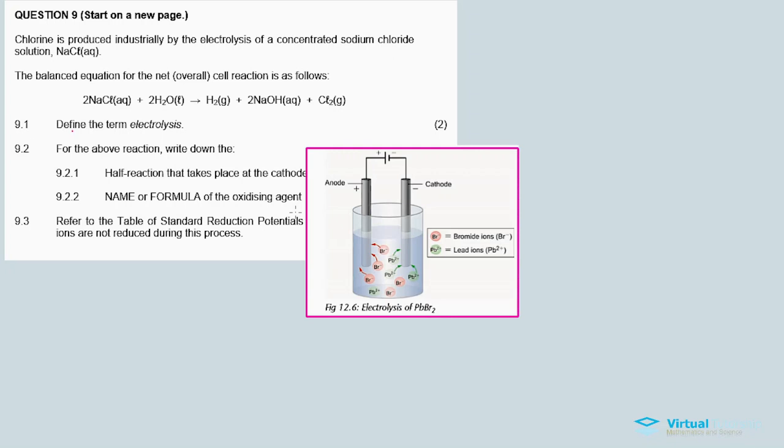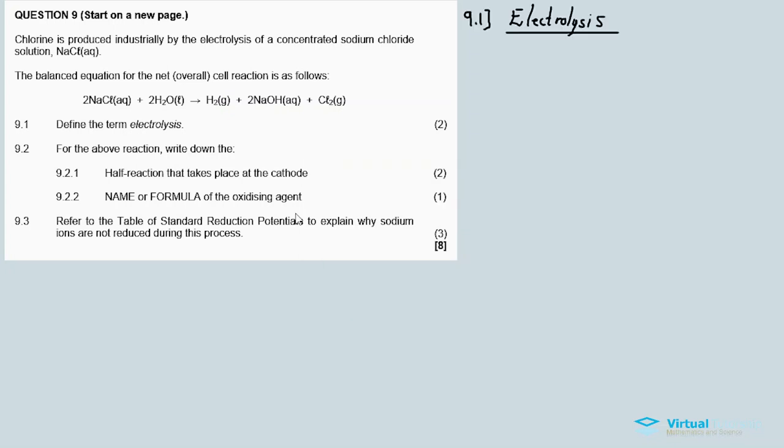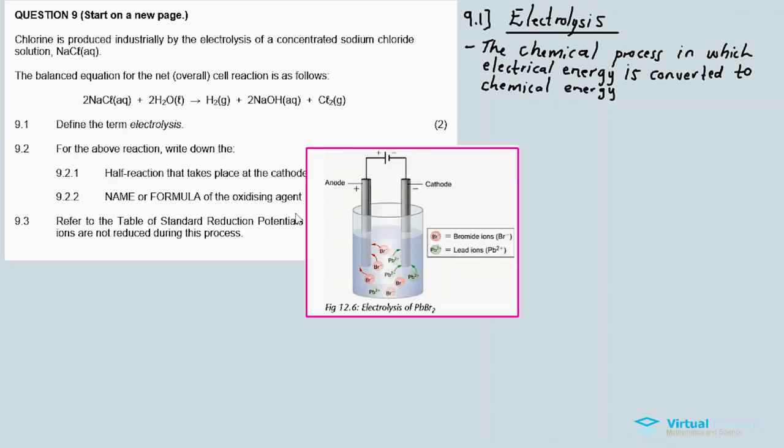So therefore, on 9.1, I'm going to explain the term electrolysis. Electrolysis is what? Is the chemical process in which electrical energy is converted to chemical energy. And in this electrolytic cell, we have a power source. The power source is being used to initiate a chemical reaction. So thus, it changes electrical energy to chemical energy.